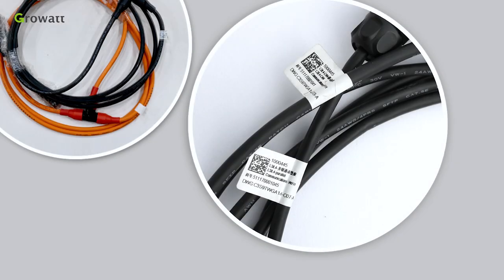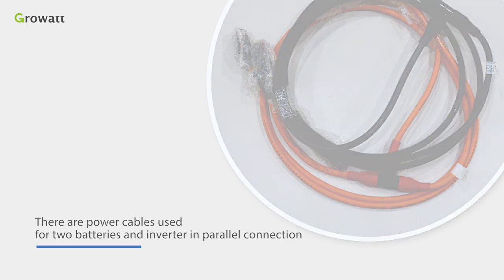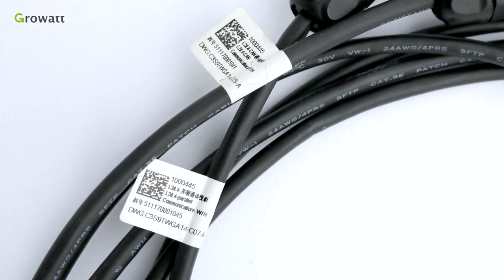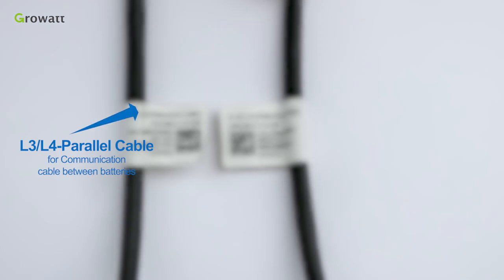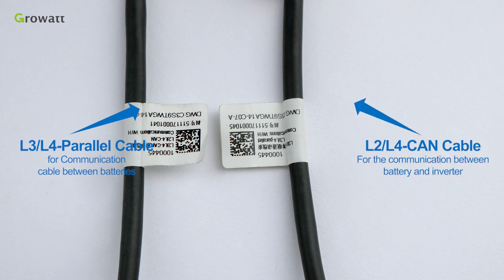There are power cables used for two batteries and inverter in parallel connection. Pay attention to the communication cable. Cable with L3 L4 parallel label is for the communication between batteries. Cable with L2 L4 CAN label is for the communication between battery and inverter.